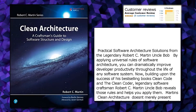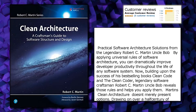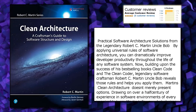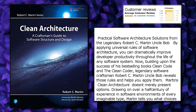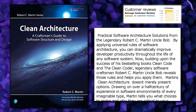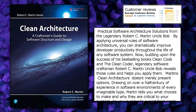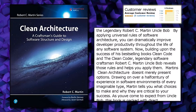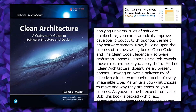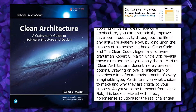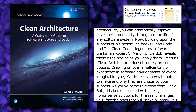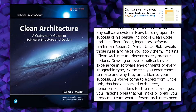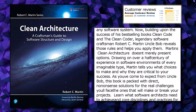Practical software architecture solutions from the legendary Robert C. Martin, Uncle Bob. By applying universal rules of software architecture, you can dramatically improve developer productivity throughout the life of any software system. Building upon the success of his best-selling books Clean Code and the Clean Coder, legendary software craftsman Robert C. Martin, Uncle Bob, reveals those rules and helps you apply them.